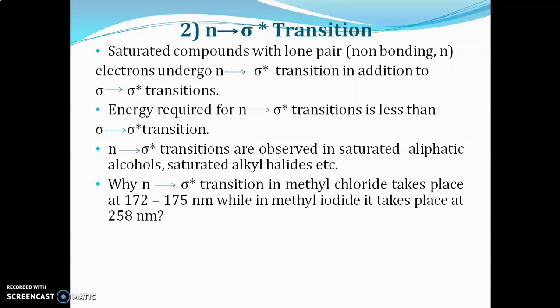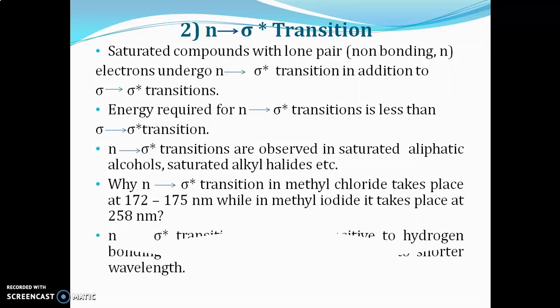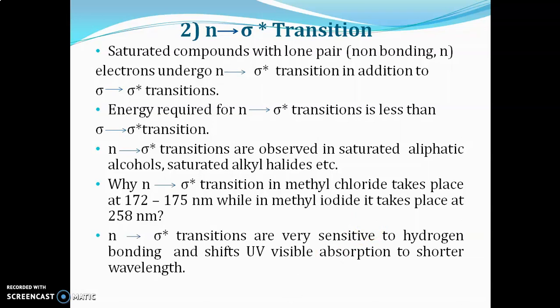The reason is that the n electrons of iodine are loosely bound while those of fluoride are tightly bound. Iodide's electrons require less energy for excitation, so the wavelength is longer — hence methyl iodide absorbs at 258 nm versus 172–175 nm for methyl fluoride. N to sigma transitions are also very sensitive to hydrogen bonding, which can shift UV-visible absorption to shorter wavelengths.